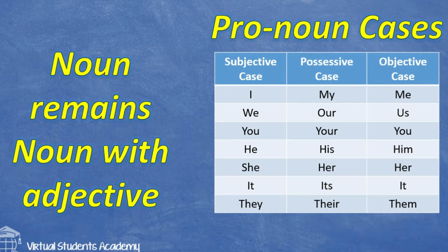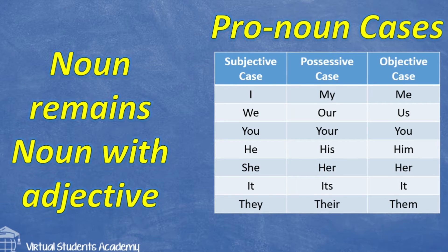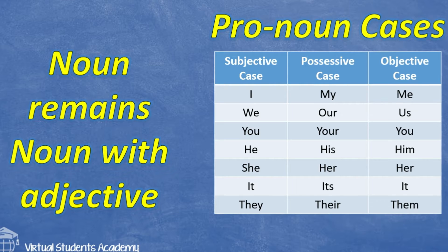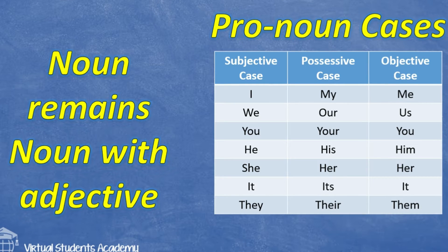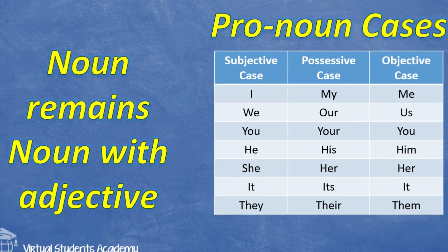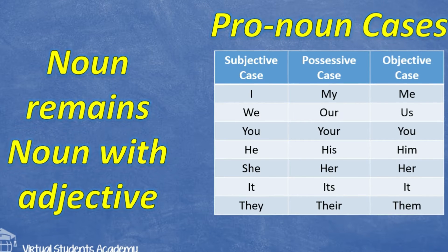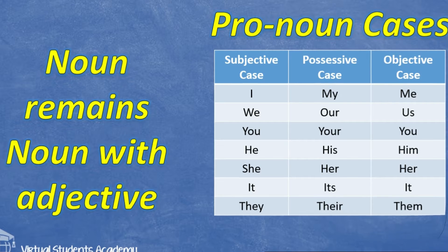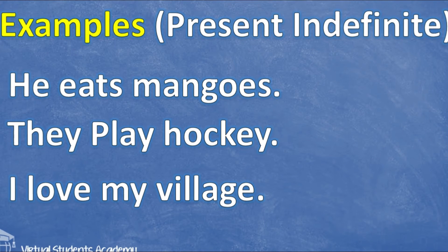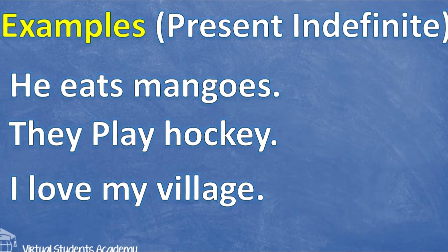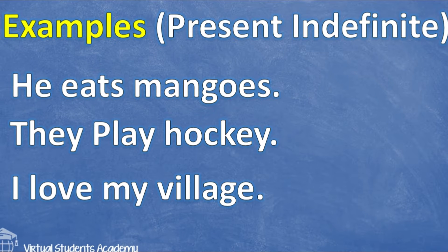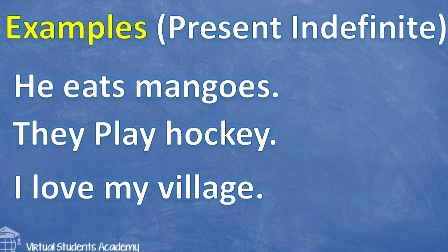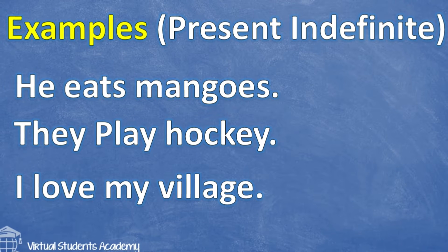In active and passive voice, we are going to focus on the first and last columns, which are the subjective case and objective case. For example, when 'he' jumps to the object place, it will change into 'him.' Similarly, 'they' will change into 'them,' and 'I' will change into 'me.'